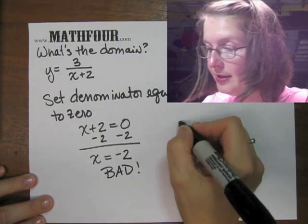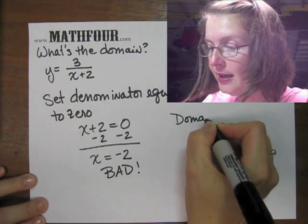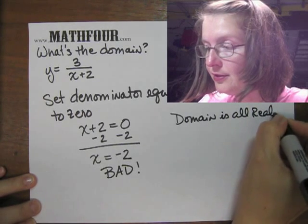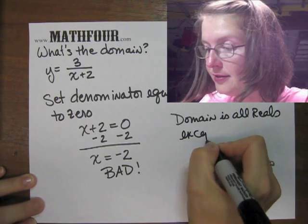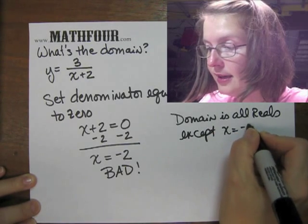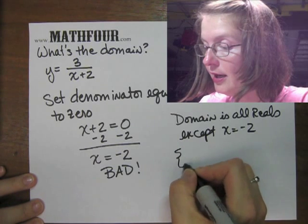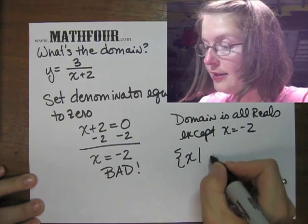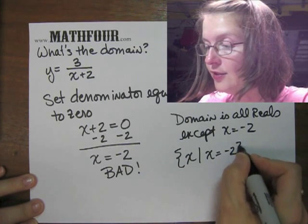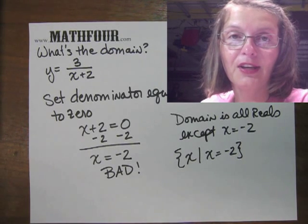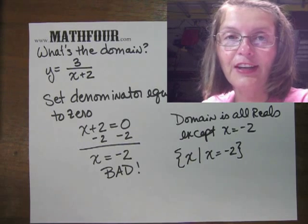So we would write this domain is all reals except x = -2, or we can write all x such that x is not equal to -2 and so on. So I'm going to scooch over to another screen and do another one.